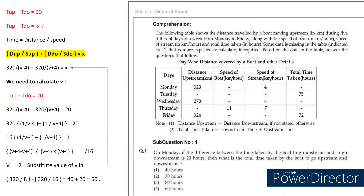This is the comprehension. It is all about a boat, and the data given includes distance upstream, speed of boat, speed of stream, and total time taken. On the left side, you can see the days from Monday to Friday. They have given two notes: distance upstream is equal to distance downstream if not stated otherwise, and total time taken is equal to both downstream time and upstream time.